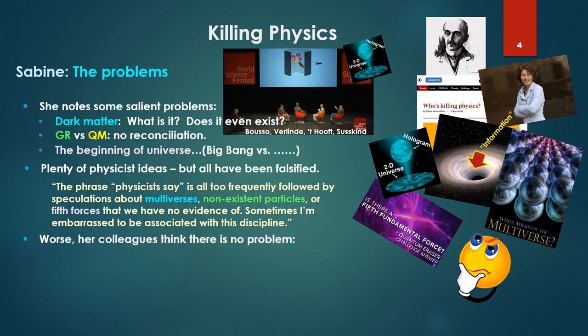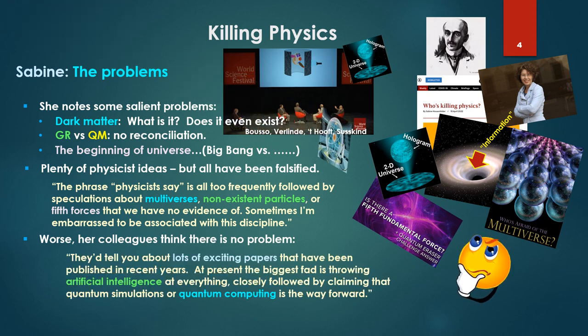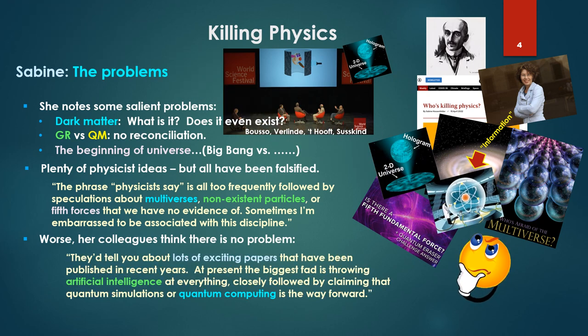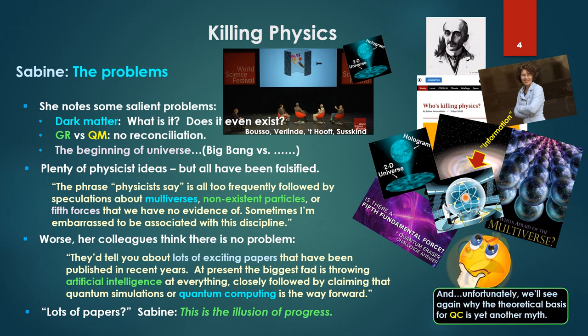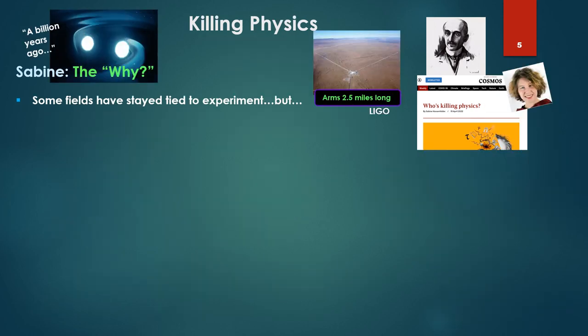But worse, she says, her colleagues think there is no problem. They tell you about lots of exciting progress that has been published in recent years. At present, the biggest fad is throwing artificial intelligence at everything, closely followed by claiming that quantum simulations or quantum computing is the way forward. Lots of papers. Sabine says this is an illusion of progress. And unfortunately, we'll see again why the theoretical basis for quantum mechanics is quantum computing is yet another myth floating around in their discipline.